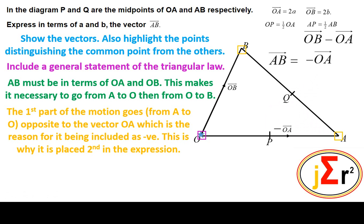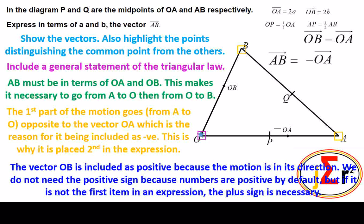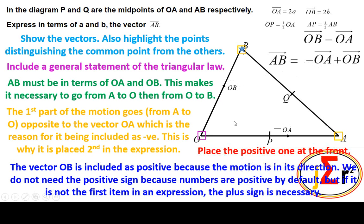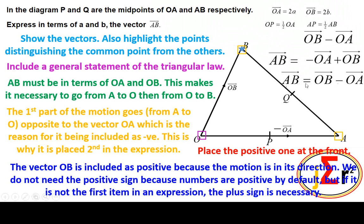If we are going to go directly as indicated by the motion, then OA would normally go first, and then OB will go next. The vector OB is included as positive because the motion is in its direction. We do not need the positive sign because numbers are positive by default, but if it is not the first term in an expression, the plus sign is necessary. We are going in the direction of OB in the second part of the motion, therefore OB is included as positive. All we do is place the positive one at the front, and we have the triangular law: AB is equal to OB minus OA.